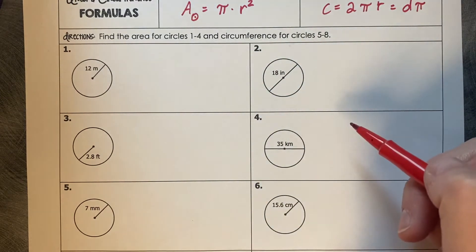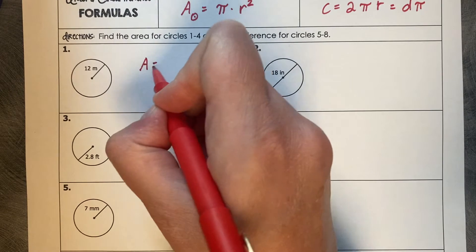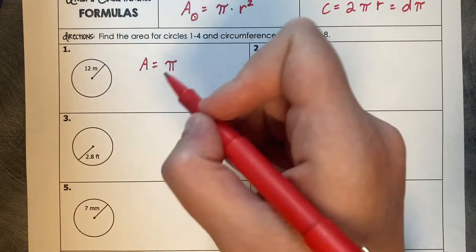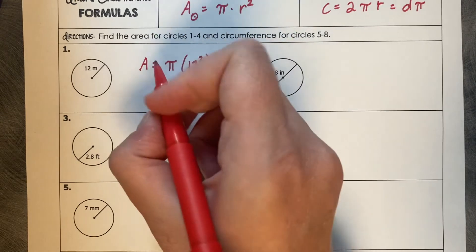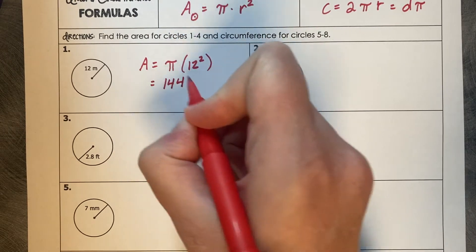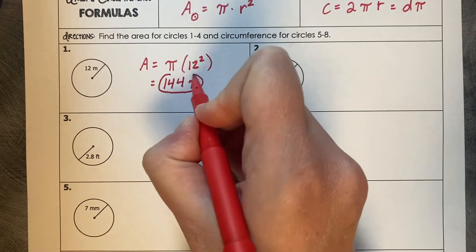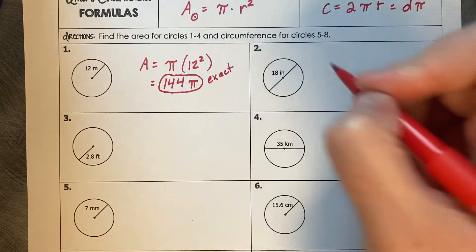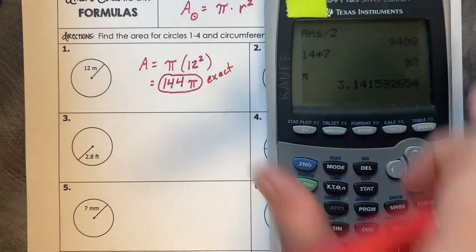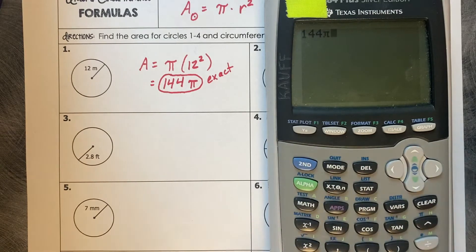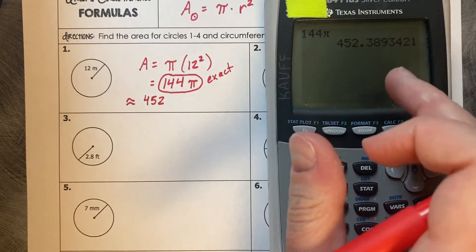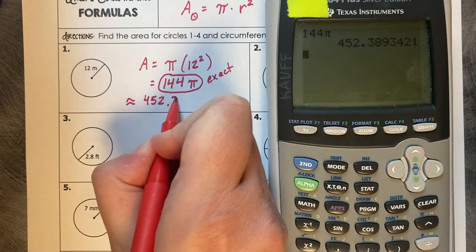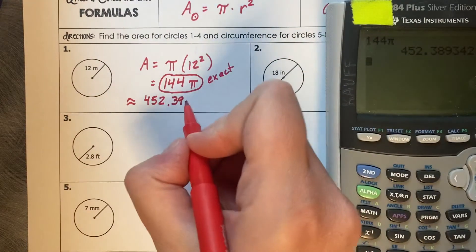If we want the area we do pi times our radius, which in this case is 12, so 12 squared. Then 12 squared is 144, and then times pi. This is an exact answer. And then if you want to know what that is approximately, you can type it into your calculator and say 144 pi, which is approximately 452 and then it doesn't say what to round to, let's do two decimal places, how about 0.39. This does have units on it so it's really meters squared.